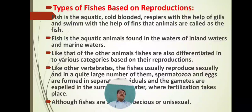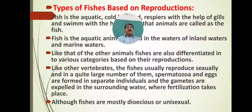On the earth planet, approximately 30 to 40,000 fish species have been reported. All these species are categorized and differentiated into different types according to different criteria. The criterion here is reproduction. Like other vertebrates, fishes usually reproduce sexually. In a quite large number of them, spermatozoa and eggs are formed in separate individuals, and the gametes are expelled into the surrounding water where fertilization takes place.